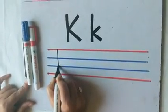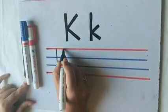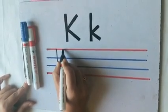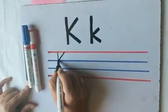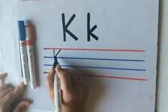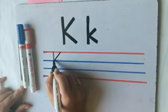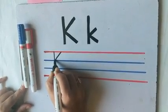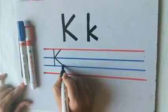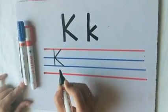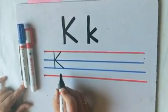Then we will make a right slanting line from the first red line, stopping on the first blue line. Then we will make a left slanting line from the first blue line to the second blue line. This is capital letter K.